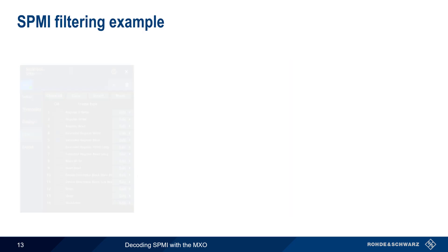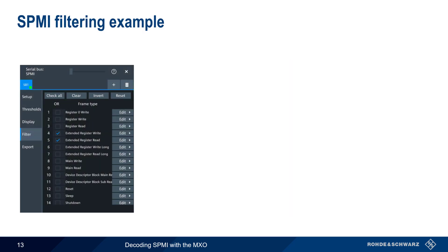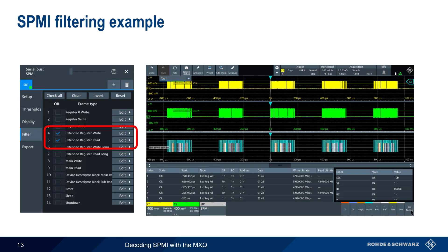Let's look at a simple example of filtering. After we deselect everything except the Extended Write and Extended Read frame types, the decode table shows only results for these two types of frames. Recall that we could use the Edit button to the right of each frame type to filter on specific address or data values within these frames as well.